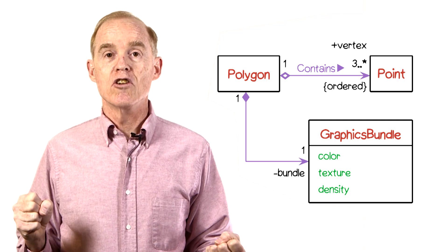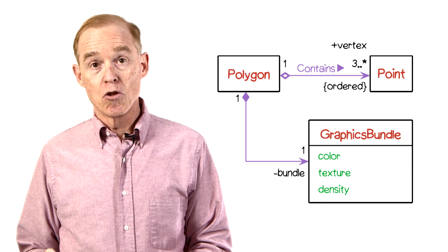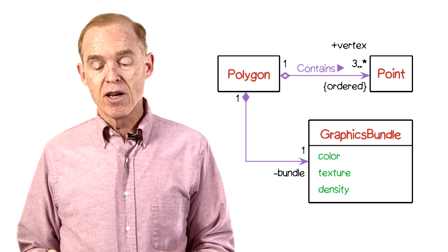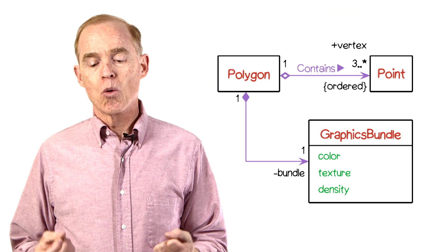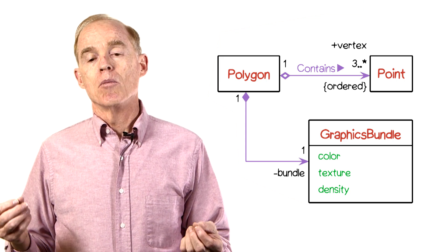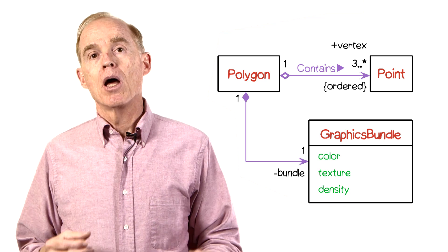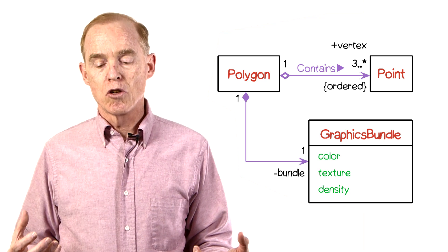The second association at the bottom, between graphics bundle and polygon, isn't named directly. This is fine. We'll see that we can describe it using roles, which are ways of giving similar information about how the association is relating the two classes.